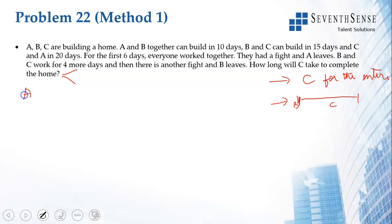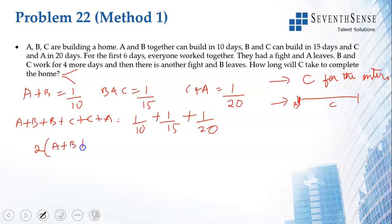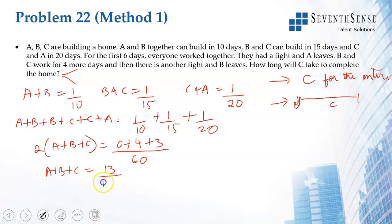A and B in one day can do 1/10th of the work. B and C in one day can do 1/15th of the work. C and A in one day can do 1/20th of the work. If I add all of these, I get A+B + B+C + C+A, which equals 2(A+B+C) = 1/10 + 1/15 + 1/20. Taking LCM as 60, the numerator is 6 + 4 + 3 = 13, so A+B+C = 13/120. All three together do 13/120th of the work per day.